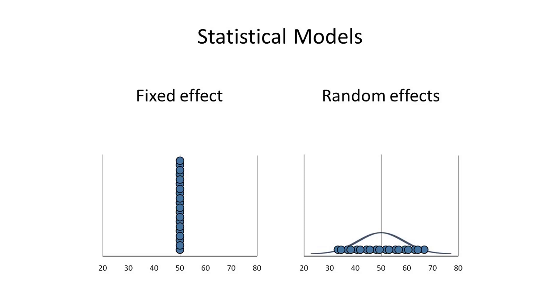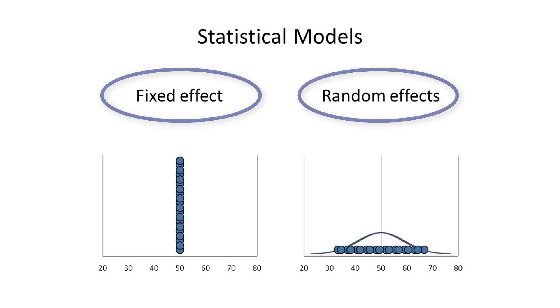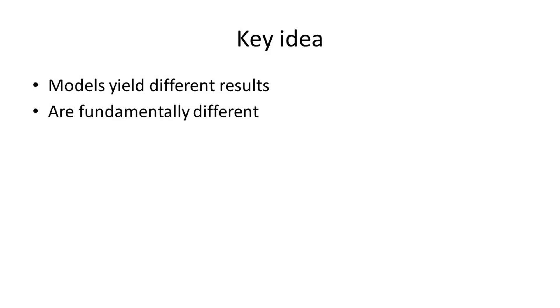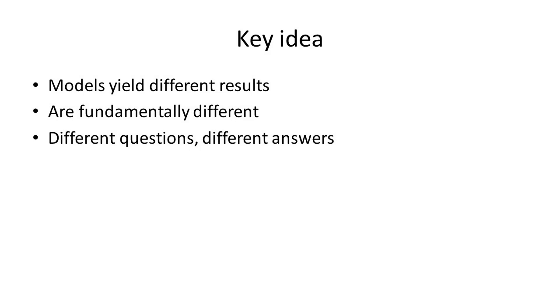Those of you who have read or performed a meta-analysis probably know that one of the first decisions we need to make is which statistical model to use. Most meta-analyses are based on one of two statistical models: the fixed effect model or the random effects model. The first point I want to make is this: when people speak about the differences between the two models, we often talk about the fact that they yield different results. While this is true, I think it's misleading to focus on this. The reason the models yield different results is because they are asking fundamentally different questions. Each model asks a different question and yields the correct answer for that question. We need to understand what question each model is asking and then choose the model that matches our goals.